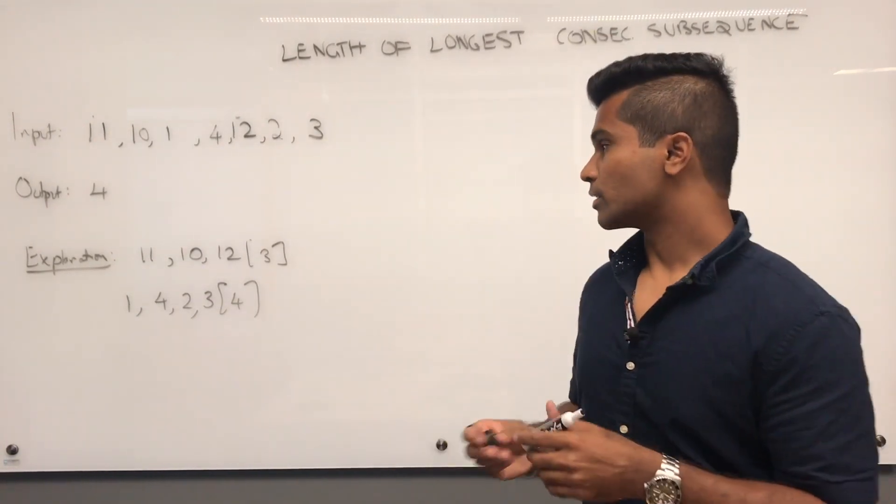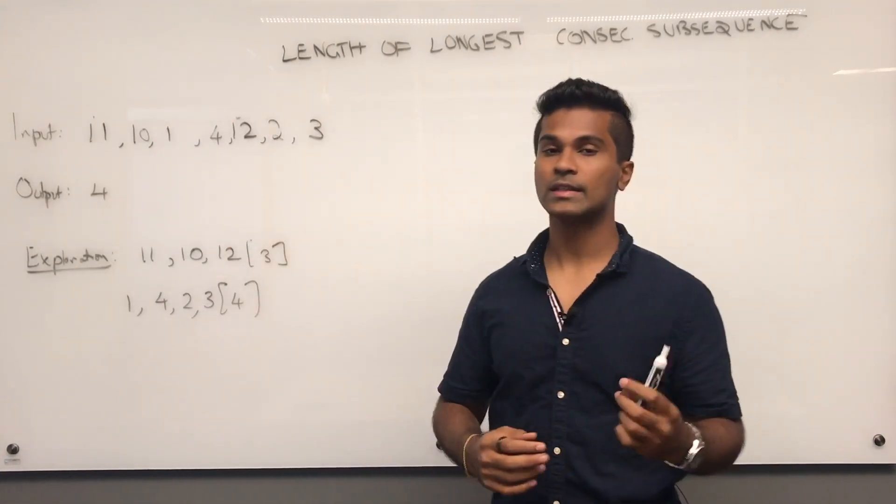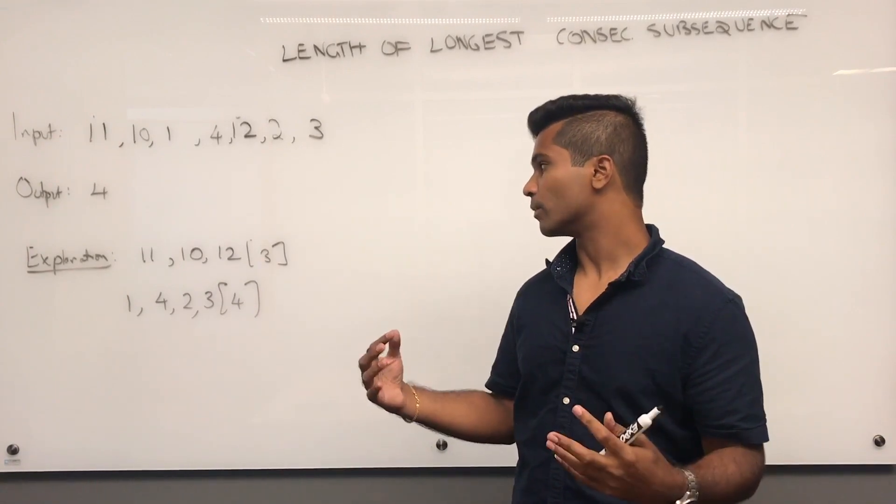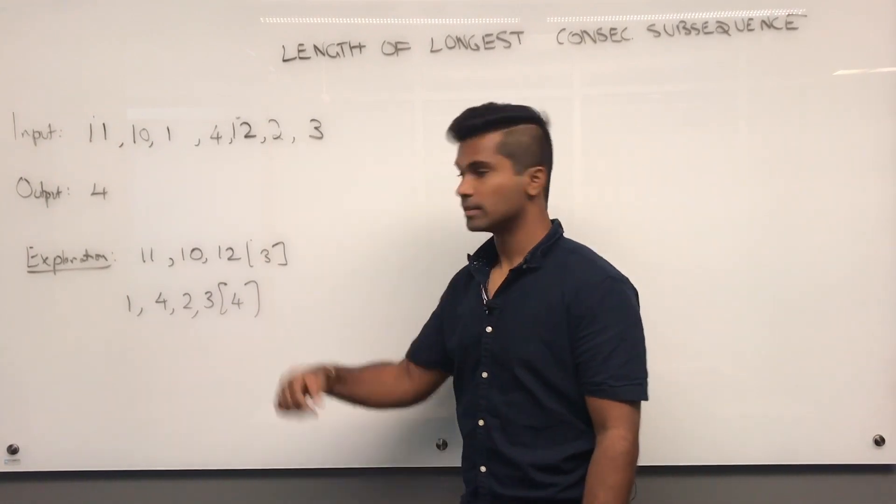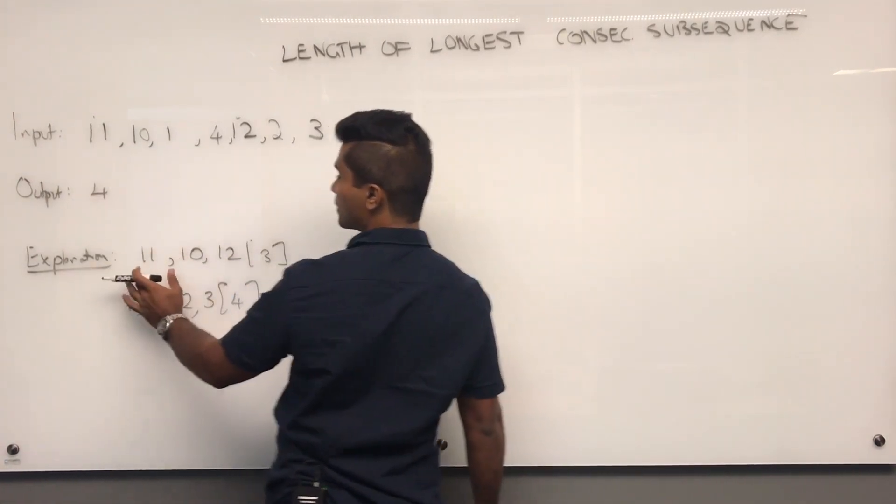Now, in this question, the input is going to be an array like this, and what they want is an integer output of the longest subsequence that contains consecutive integers. So, for example,